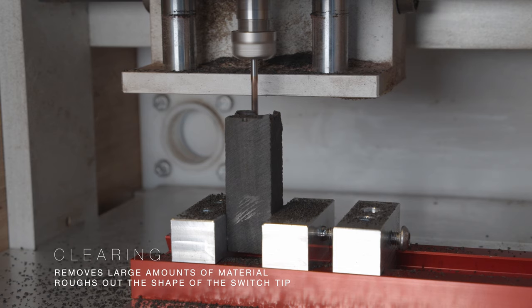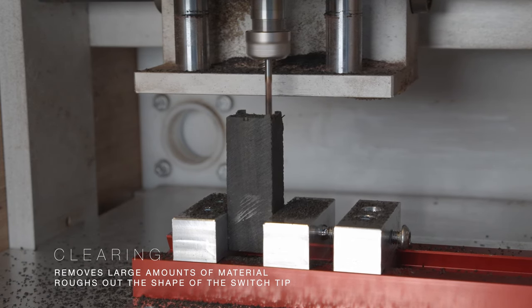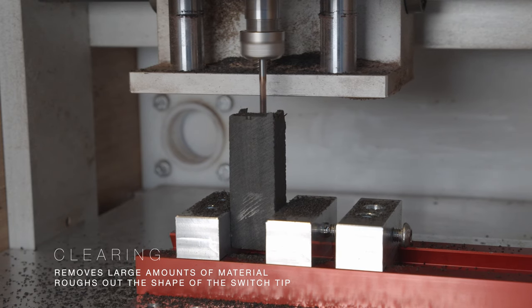After facing, we begin adaptive clearing. And what this really does is rough out the initial shape of the switch tip from the top by clearing as much wood as possible.